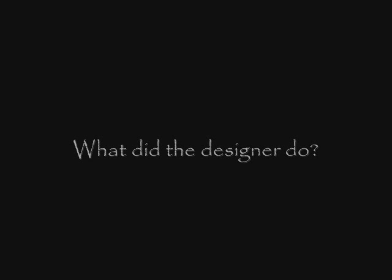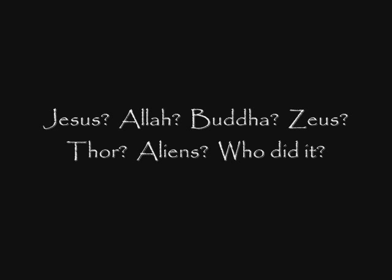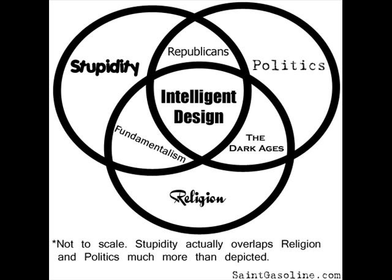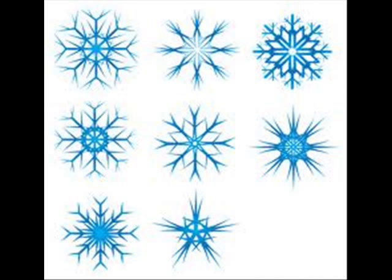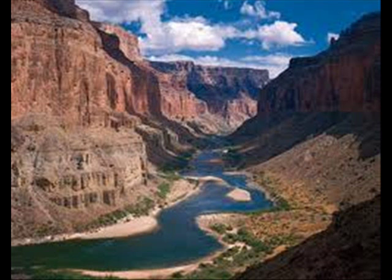What steps did the designer take to design each individual creature? Who or what is the designer? These are fair questions that any scientist would seek an answer to. Instead, ID scientists go out of their way to avoid formulating answers to these questions. They expend a great deal of effort to ensure that everyone knows they make no claims regarding the identity of the designer. In other words, according to intelligent design proponents, the identity of the designer — and therefore the mechanisms the designer used — are not important, so long as they can prove that design exists. Even if they could prove that design were anything more than a misconception of order in nature by fallible human minds, the next step as scientists would be to explain that design and increase the explanatory power of design theory. But they don't do this.